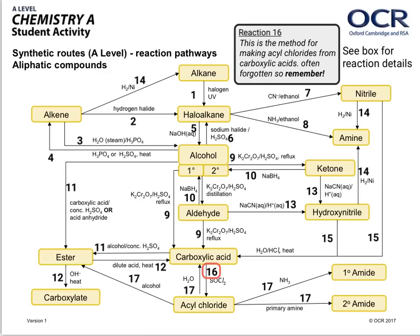Reaction 16 is an often-forgotten one because there's only one of it, but it's how we make acyl chlorides in the first place. It has a sneaky habit of cropping up in exams, particularly in more up-to-date versions where they need you to know about acyl chlorides. Please make sure you remember this — put it on a flashcard and commit it to long-term memory. SOCl₂ is called thionyl chloride.